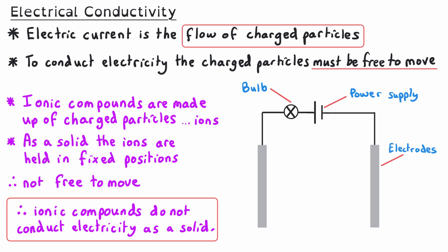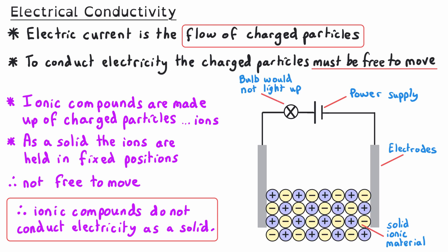If we connect a circuit with a power supply and a bulb, with a gap in the circuit, and put a material into that gap to try to complete the circuit, we could prove whether the material is an electrical conductor or not. If we fill the gap with a solid ionic material, the bulb would not light up, since the ions in the 3D lattice are not able to move, and so no electric current can flow.